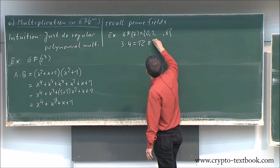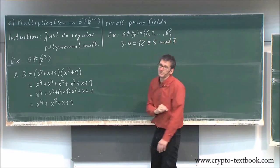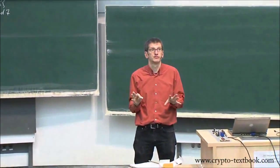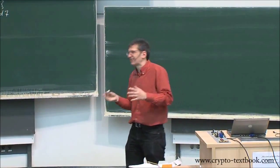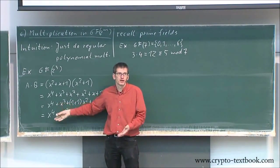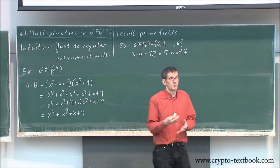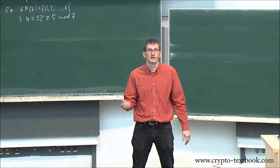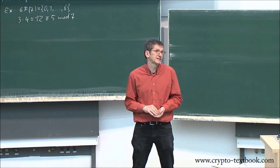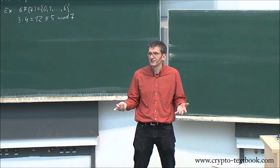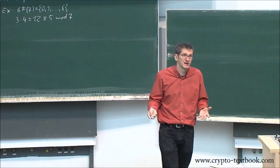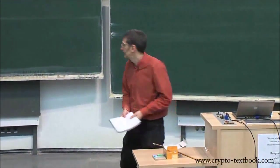Mod seven — exactly, modular reduction. The same idea applies to extension fields. We want to do modular reduction, but now you cannot reduce mod two or mod seven. You have to reduce modulo a polynomial. To get a smaller polynomial, you divide by another polynomial and look at the remainder.